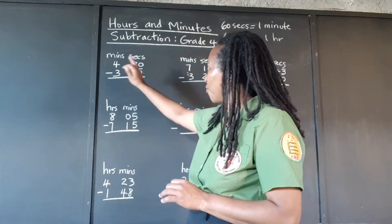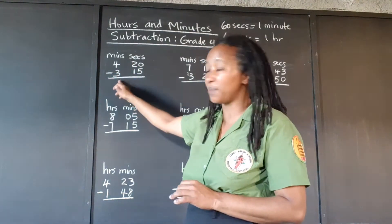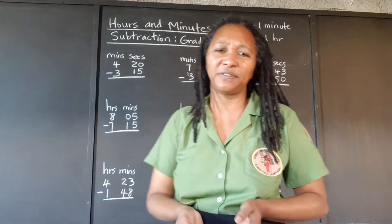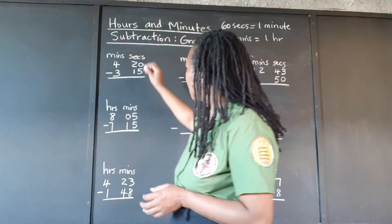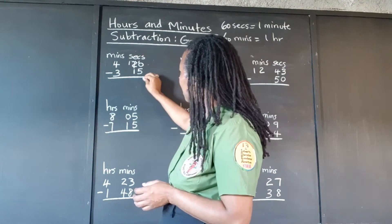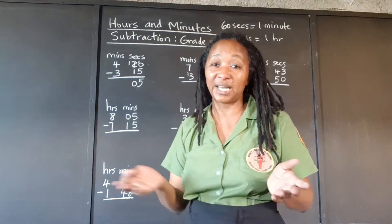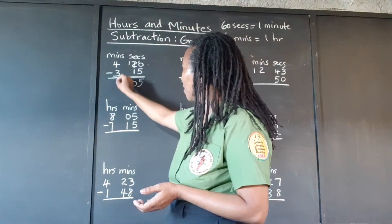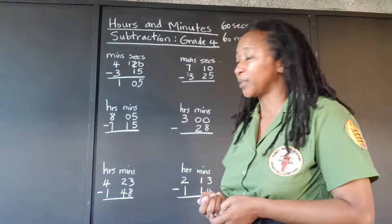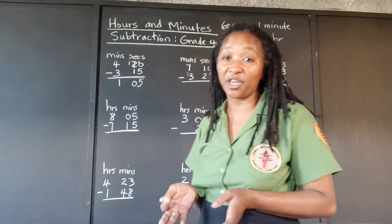We have 4 minutes 20 seconds and we're taking away 3 minutes and 15 seconds. We can take 15 from 20, so we just do the regular subtraction and we're left with 5 seconds. And 4 take away 3 gives 1. So that's 1 minute and 5 seconds — we didn't have any challenge there.